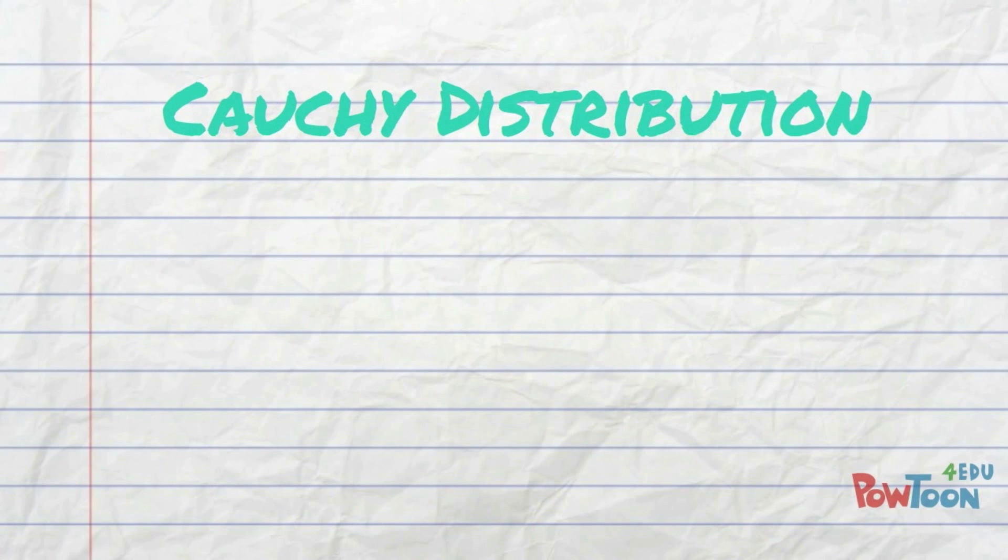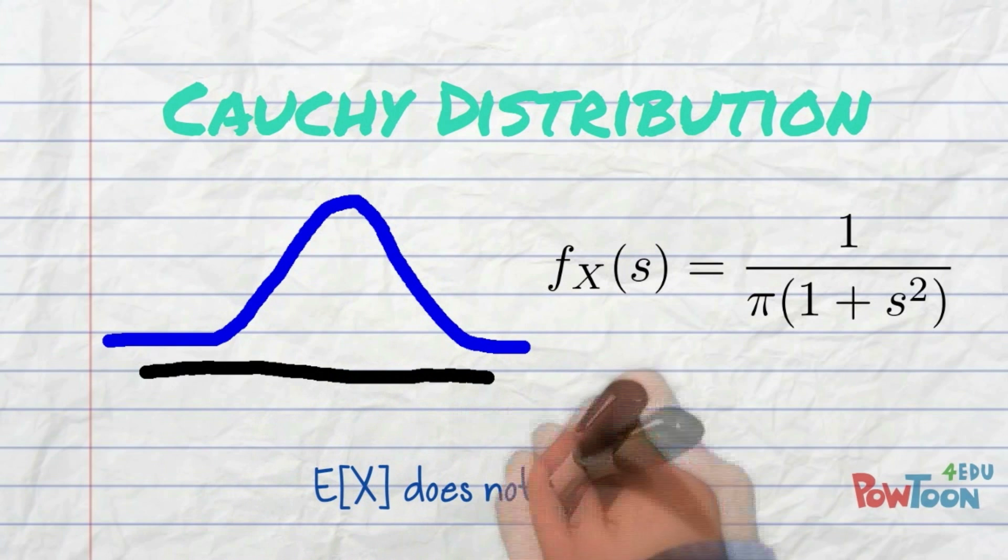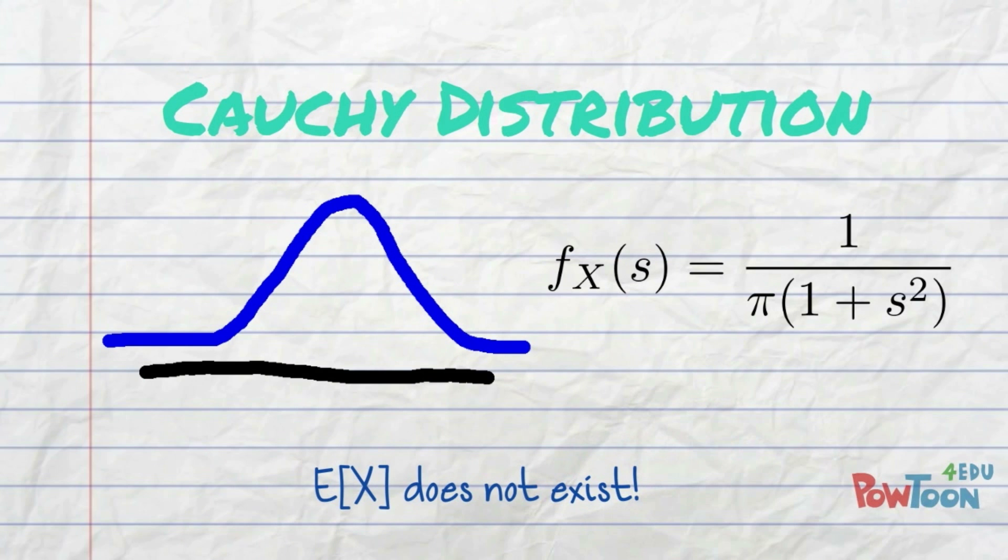An example of this is the Cauchy distribution, which does not have an expected value, because both its right-hand tail and left-hand tail are simply too big.